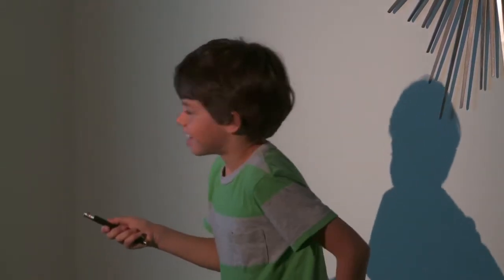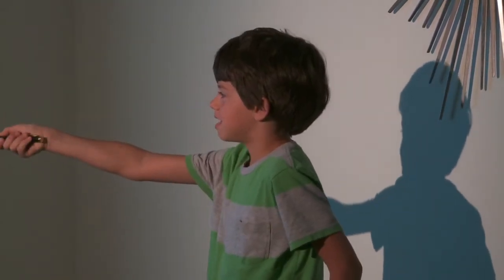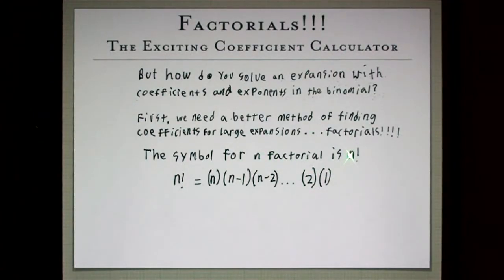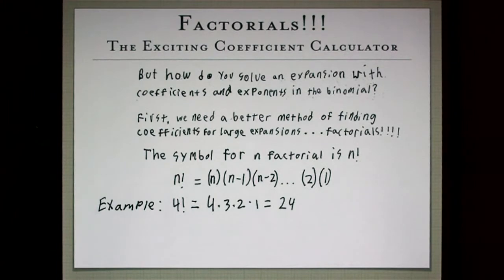Factorials! The symbol for factorial is n!. The formula for n factorial is n factorial equals n times n minus 1 times n minus 2 dot dot dot 2 times 1. And as an example, 4 factorial equals 4 times 3 times 2 times 1 equals 24.